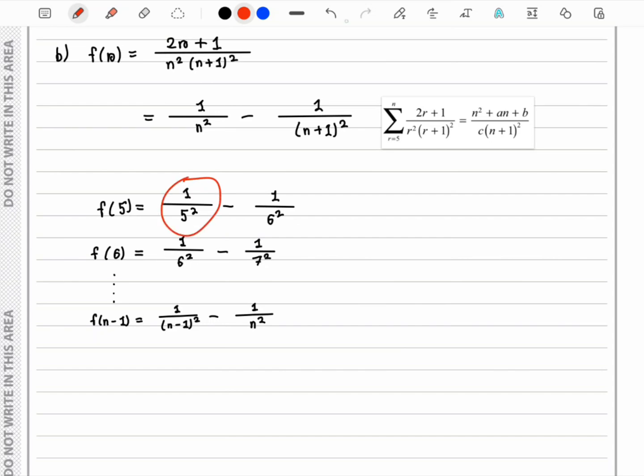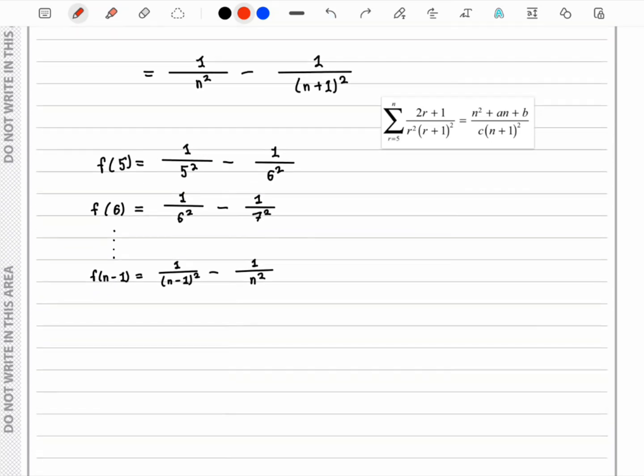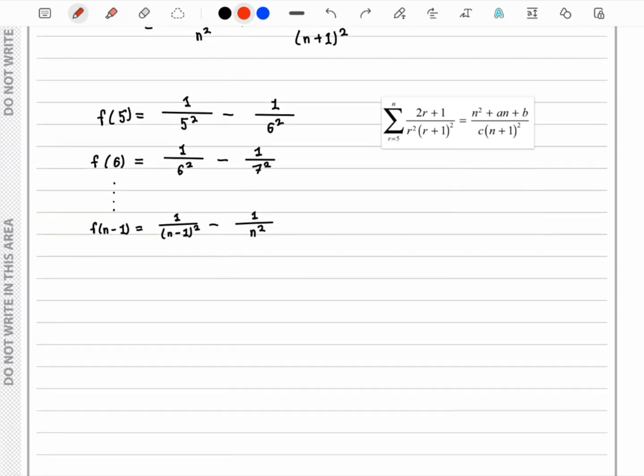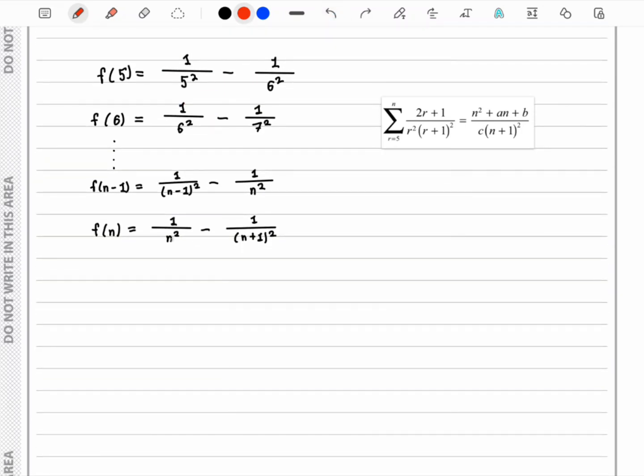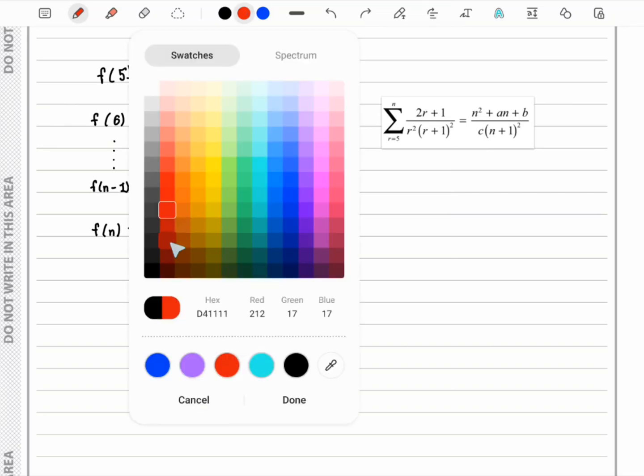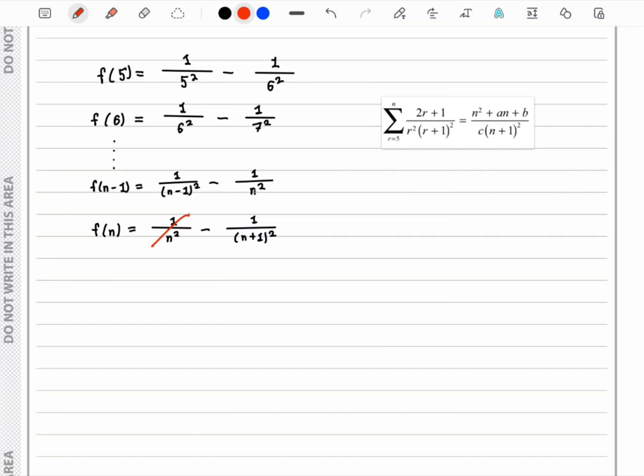Now we go to f(n-1), which is this term over here, and then we also write f(n), which is this term. We can see that this cancels out with this, and this will cancel out with this. So we are only left with 1/5² minus 1/(n+1)².